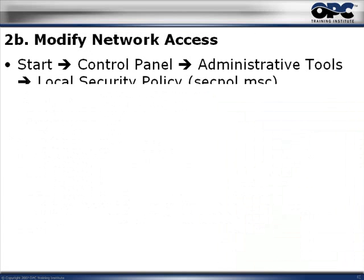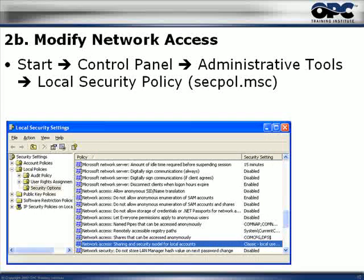There's another way to do exactly the same thing by modifying the network access settings. Click the Windows Start button, go to Control Panel, then Administrative Tools, and from there go to Local Security Policy. If you can't see Administrative Tools in the Control Panel, click 'Use Classic View' in the top left corner and it will appear. As a shortcut, click Start, click Run, and in the Run dialog box type 'secpol.msc' and the Local Security Settings application will open.